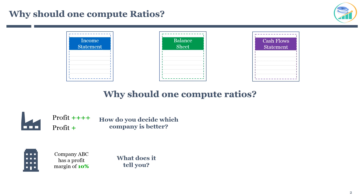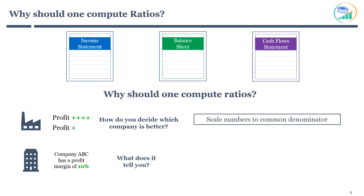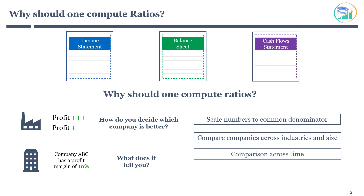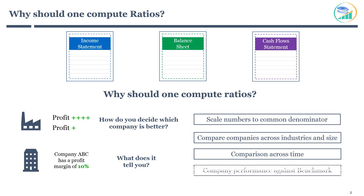Financial ratios can help solve this problem and assist with better analysis of company financial statements. They are used most effectively to compare companies and analyze financial performance. Here are a few important benefits of financial ratios: they scale company numbers to a common denominator, help compare companies across industries irrespective of their size, help with comparison across time, show how a company is changing over time, and help compare company performance against a benchmark.